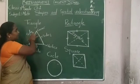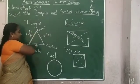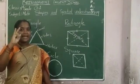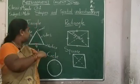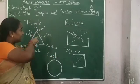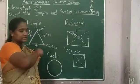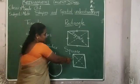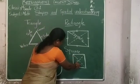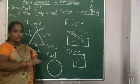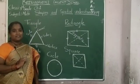So these are the four basic 2D shapes: triangle, rectangle, square, and circle. A triangle has three sides and three corners. A rectangle has four sides, four corners, and two diagonals. A square also has four sides, four corners, and two diagonals. Thank you.